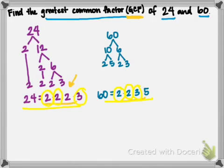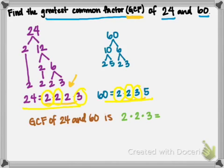And then the last common factor that they have and share is a three. So the greatest common factor of 24 and 60 is 2 times 2 times 3, which is really just 12.